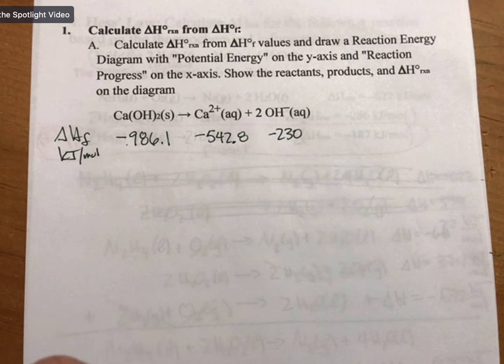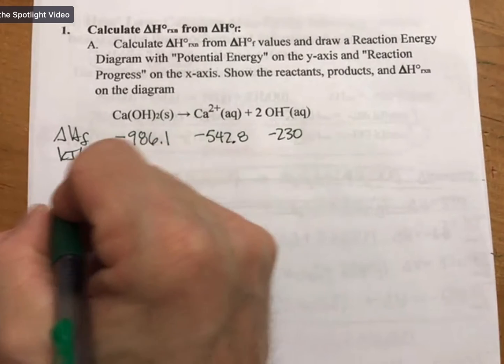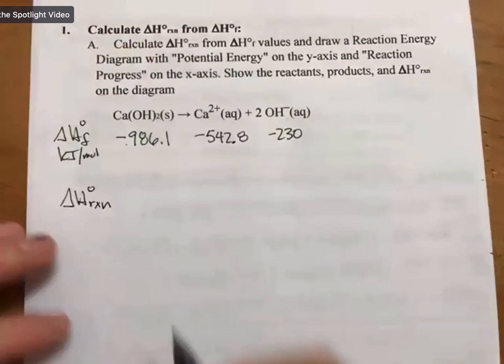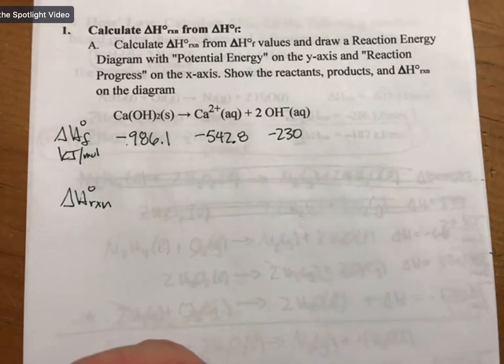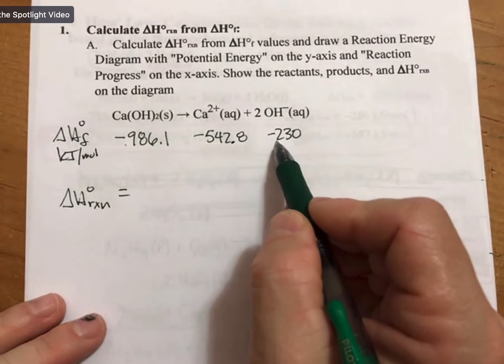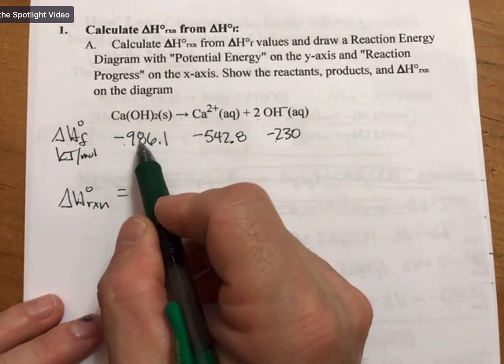So delta H reaction—whether you use the little zero symbols or not is fine with me either way—is products times coefficients minus reactants.